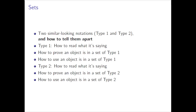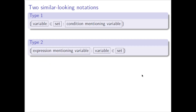Regarding sets, it's important to mention right away that there are two very similar looking notations — we'll call them Type 1 and Type 2. While they look similar, they really are different, so we have to know how to tell them apart. That will be super important. For Type 1 sets, we should talk about how to read them, how to prove something is in a Type 1 set, and how to use that something is in a Type 1 set. Then we'll do the same for Type 2. Let's dig in.